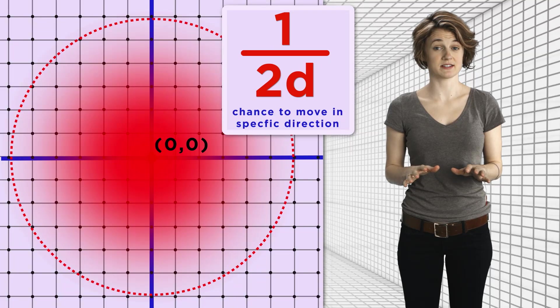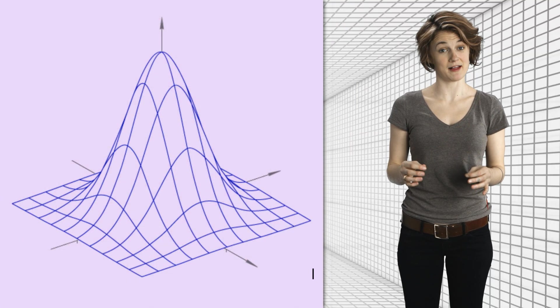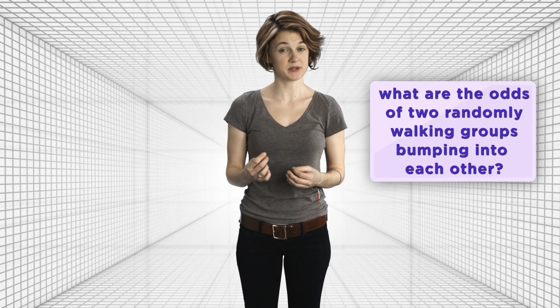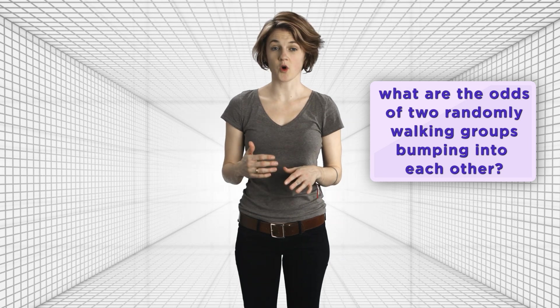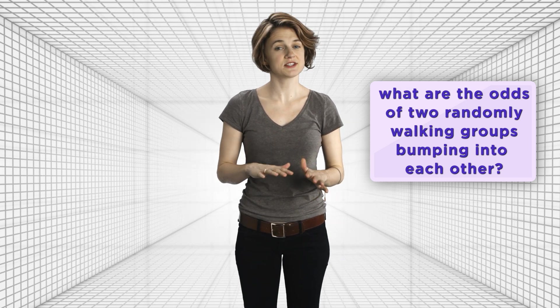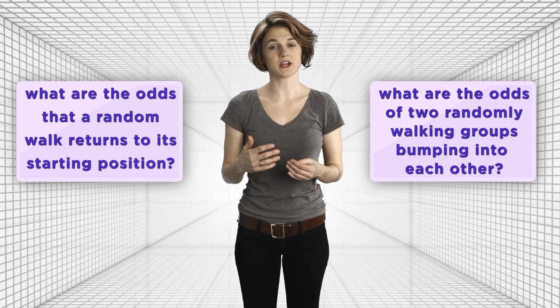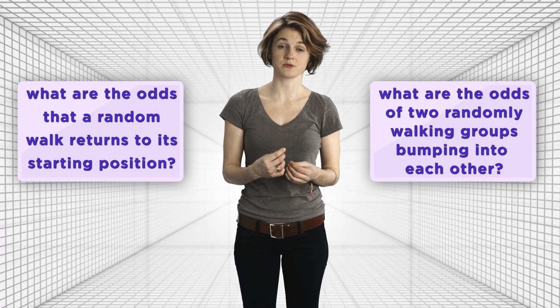So for a two-dimensional lattice, the distribution actually looks like a bell. Back to Polia's question from the beginning: what are the odds that two independent random walks bump into each other? He quickly realized that in the case of a random walk on the integer lattice, this is the same as asking, what are the odds that a random walk returns to its starting position?